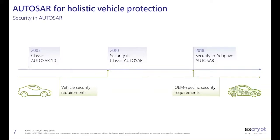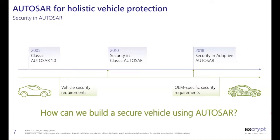In subsequent years, more and more security modules were added to AUTOSAR, with a hallmark being the release of Adaptive AUTOSAR in 2018, where a whole new set of security features were introduced. Today the OEM can rely on AUTOSAR and use the number of available security building blocks to implement its own security requirements, although some OEM-specific requirements — like a proprietary immobilizer — still need to be fulfilled independently.